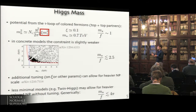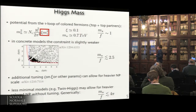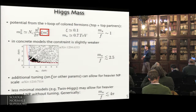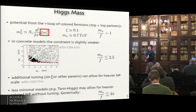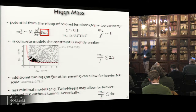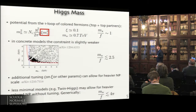There are also more clever models, such as twin Higgs models, where the top partners are hidden by additional symmetries. In these models the new degrees of freedom needed to cancel the divergences are not colored under the standard model color group, so the relation is even more relaxed. In any case, generically you expect to see something at scales below 4π F, and in twin Higgs models roughly half of that.